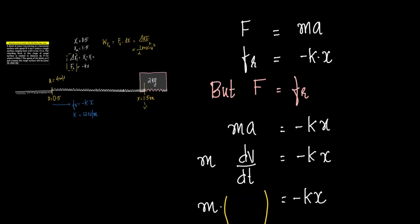For that, F is equal to ma. Now what is F here? F is Fr and what is Fr equal to? F is equal to minus kx, which means we can take that ma is equal to minus kx and a is dv by dt.